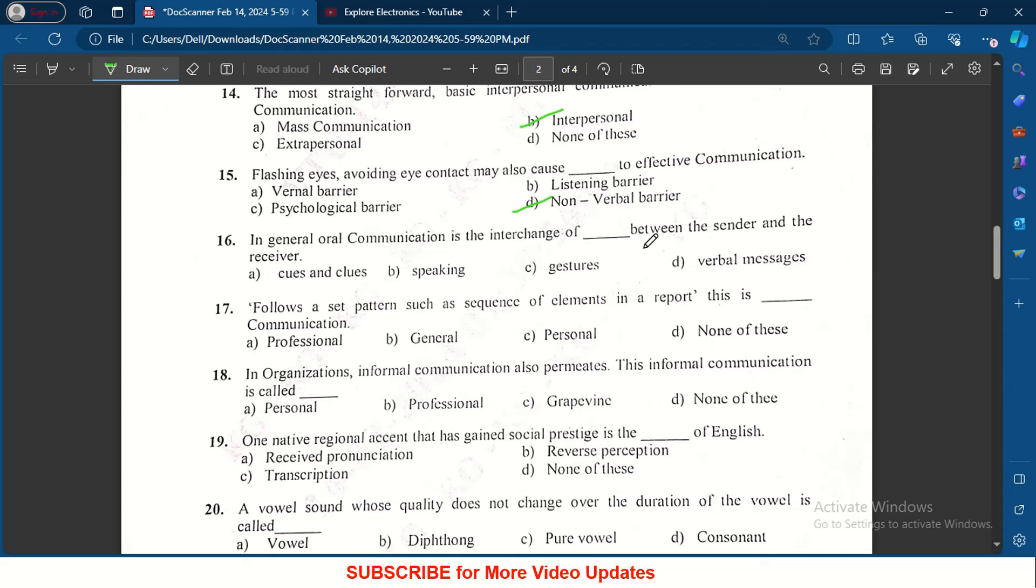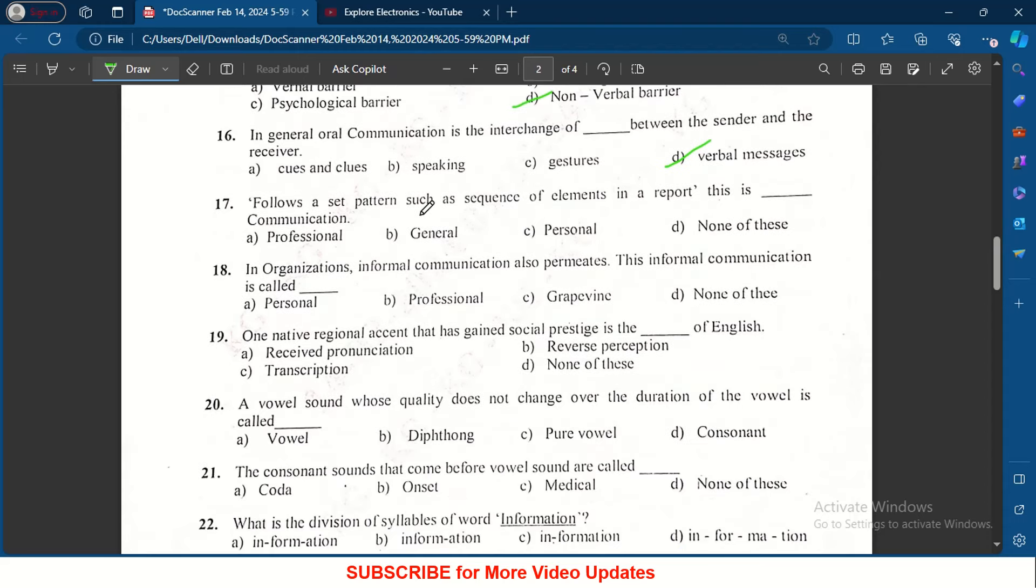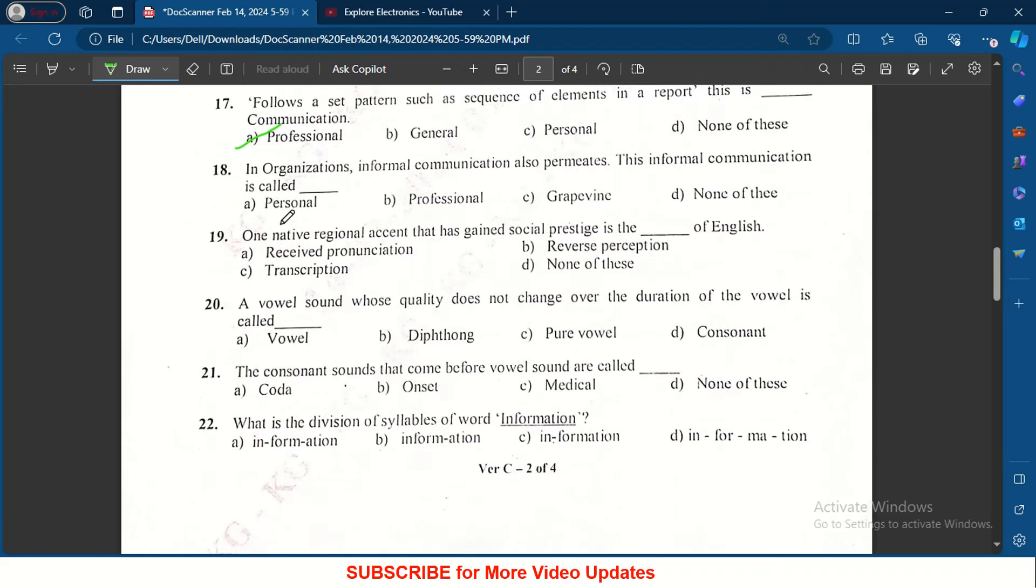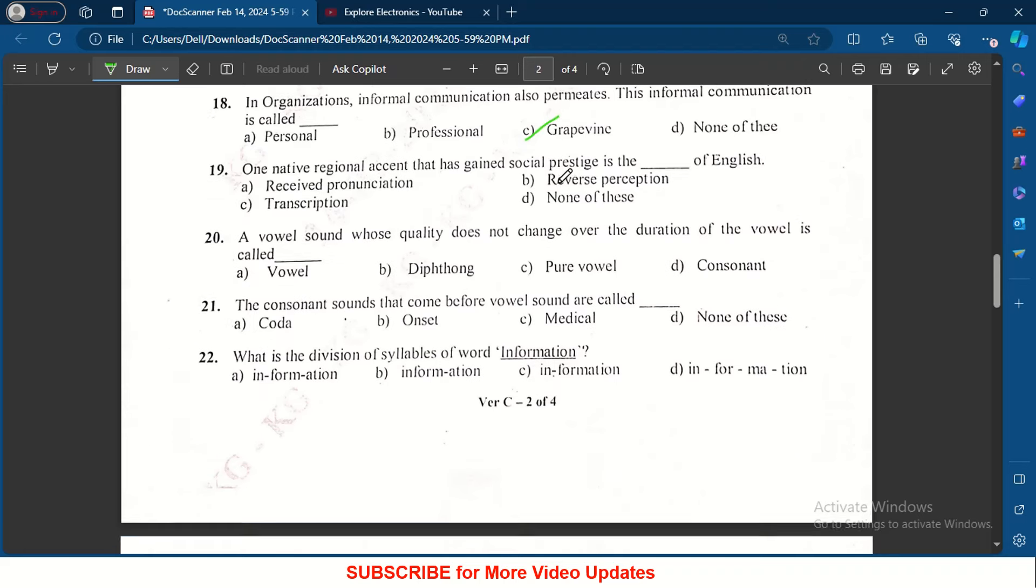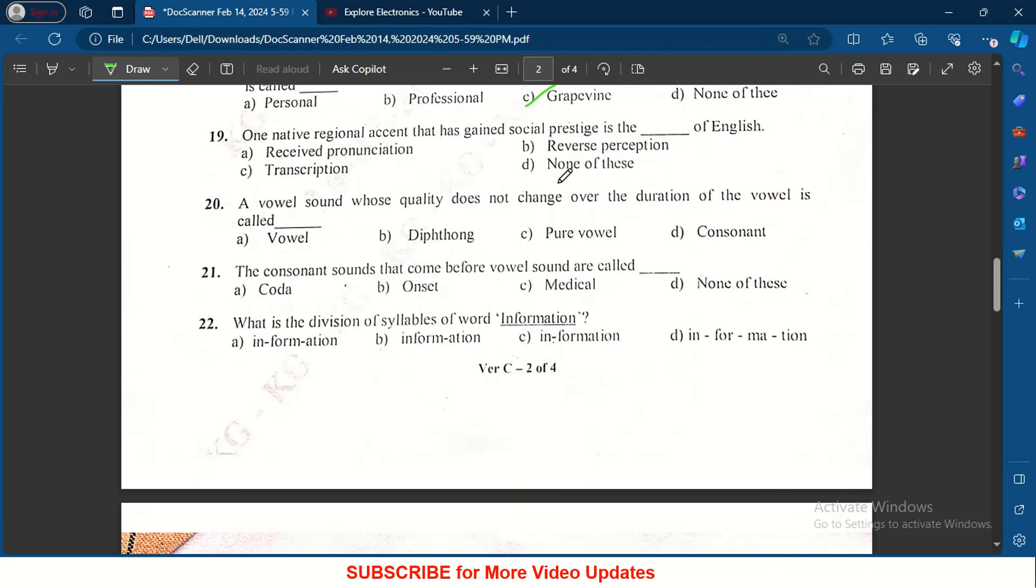So in general, overall communication is the interchange of dash between the sender and the receiver. Overall communication means it is verbal messages. Follows a set of patterns such as sequence of elements in a report, this is dash dash communication - it is professional communication. In the organizations, informal communication also permeates. This informal communication is called grapevine.